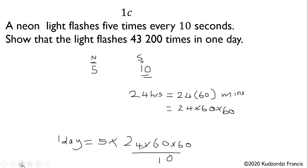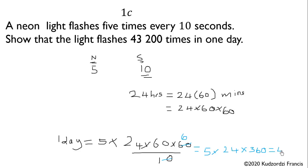We simplify: dividing 60 by 10 gives 6, so we have 5 times 24 times 360. This gives us 43,200 as required.